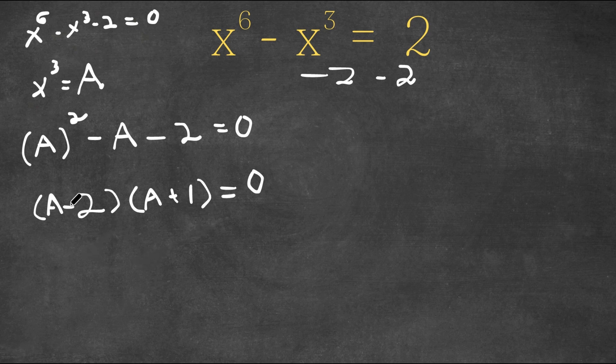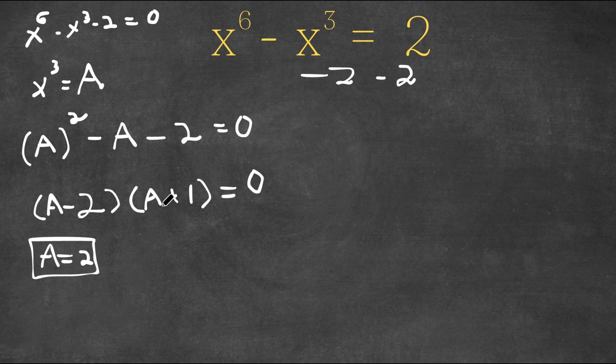And this gives us two equations. We have a minus 2 equals 0 or a plus 1 is equal to 0. If a minus 2 equals 0, then that means that a is equal to 2. And if a plus 1 equals 0, that means that a is equal to negative 1.